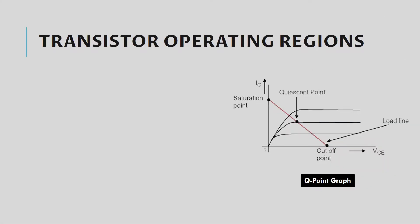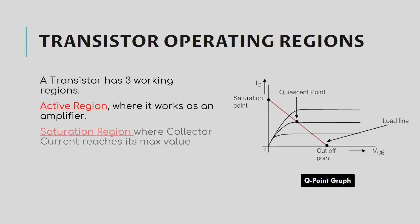A transistor has three operating regions. This Q point graph tells it all. Active region is when the Q is at somewhere in the middle of the graph, then the transistor works as an amplifier. Saturation region is when ideally the IC, the collector current, reaches its maximum value.